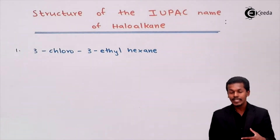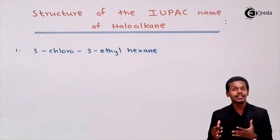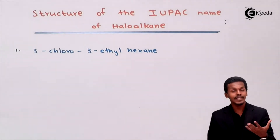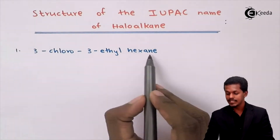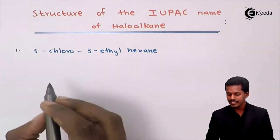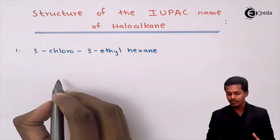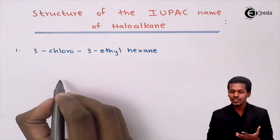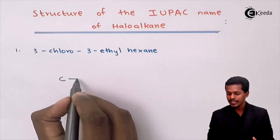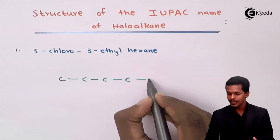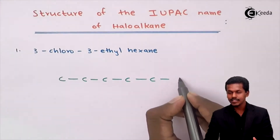How can we draw the structure? First, look at the suffix. The parent haloalkane in this case is hexane, so the parent alkane is hexane. Therefore we have to make a structure with 6 carbon atoms in a straight chain: first, second, third, fourth, fifth, and sixth carbon atom.